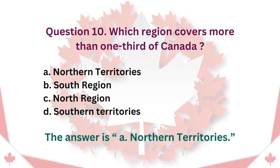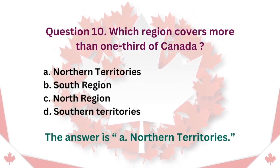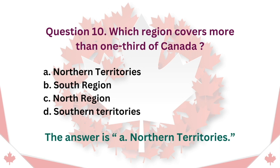Question 10: Which region covers more than one-third of Canada? A. Northern Territories. B. South Region. C. North Region. D. Southern Territories. The answer is A. Northern Territories.